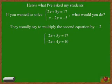They usually say that they would multiply the second equation by negative 2, obtaining the system 2x plus 5y equals 17 and negative 2x plus 4y equals 10.